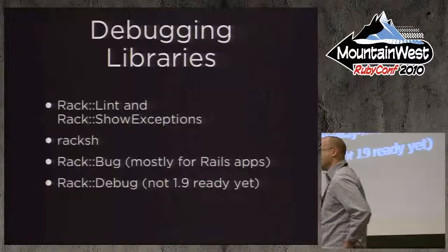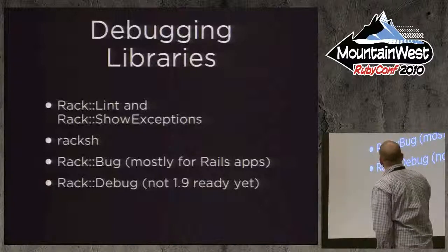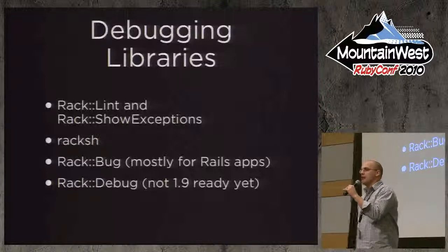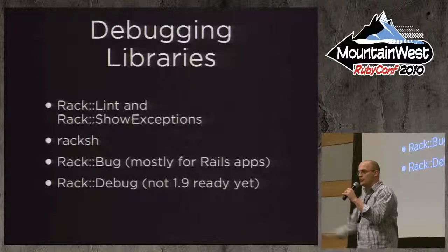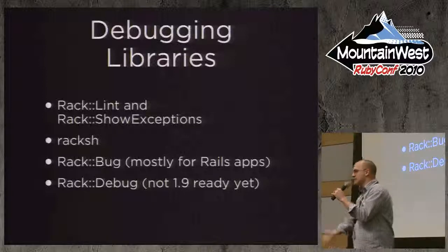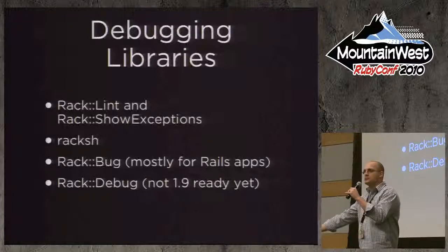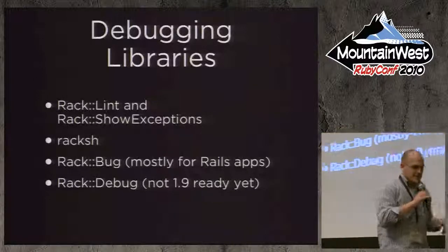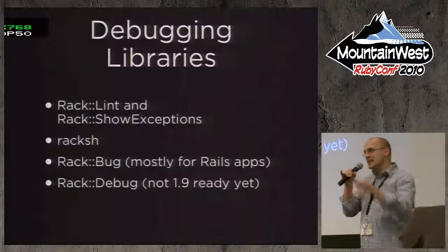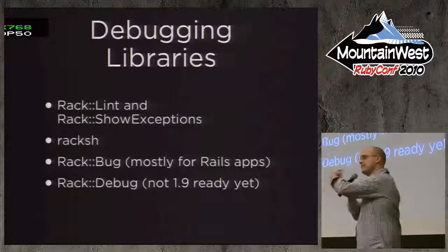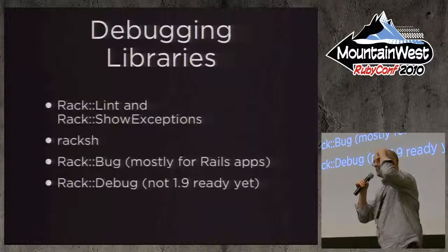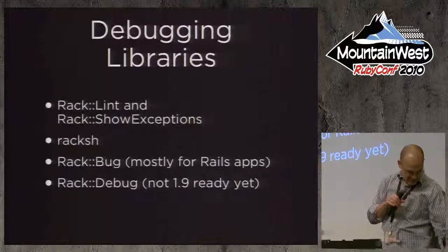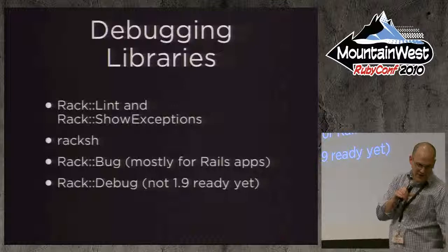There are all kinds of debugging libraries. Take note of Rack Lint and Rack Show Exceptions. You've got Rack Shell — imagine you're running your app, you crack open a shell and you're in your app. You can make requests and do all kinds of stuff right from the shell and see the responses coming back from your server. Also check out Rack Bug if you do Rails — Brian Helmkamp wrote that. Awesome library.